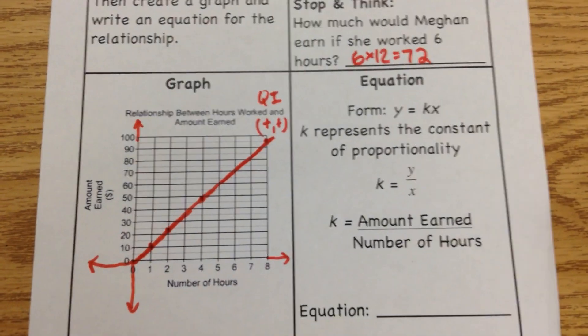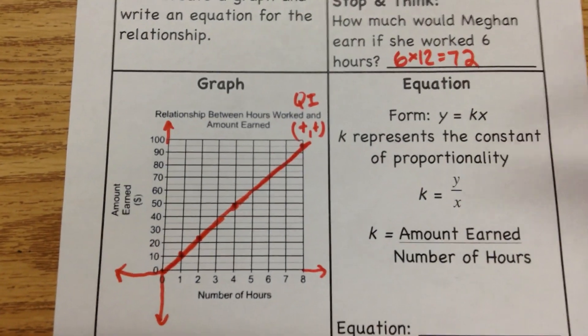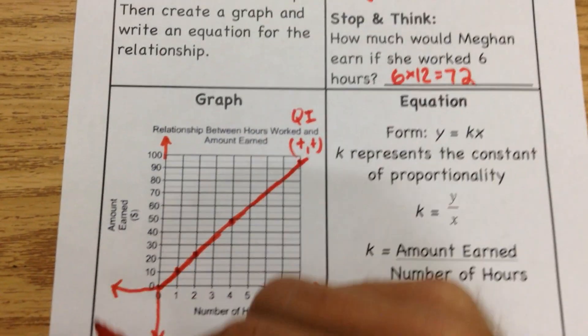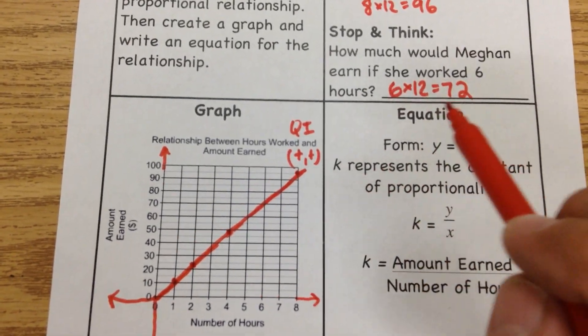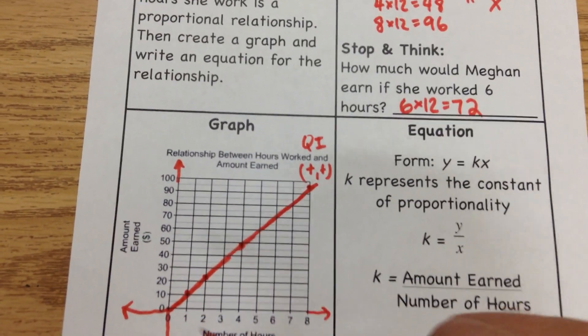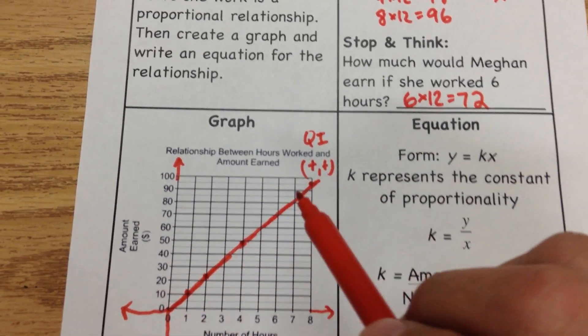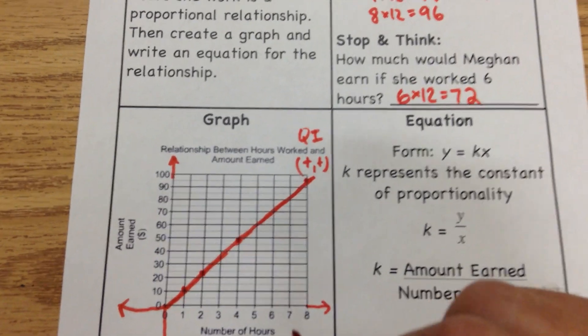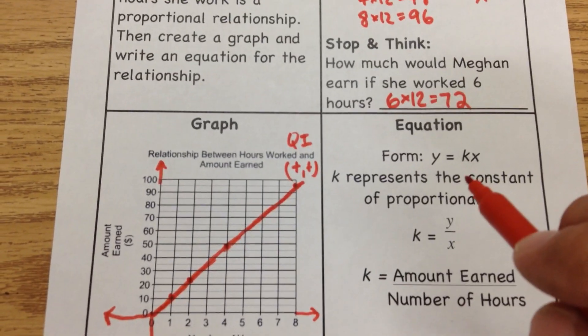Whenever you do a graph that has a perfectly straight line, it is proportional. The number that we're using to get all these is always the same. We didn't add anything to it. She didn't start off with an amount of money, she started off at zero. And we're just trying to figure out how much she made every hour. So whenever we have a straight line on a graph, that means it is a constant value. It means this K that we're about to talk about is not changing.